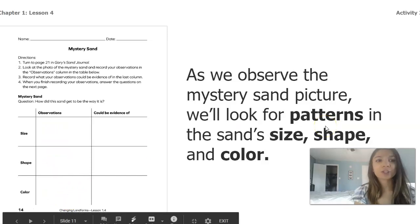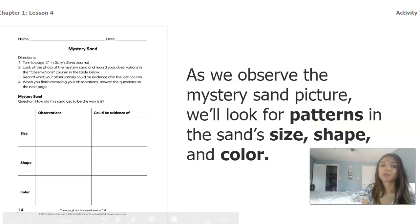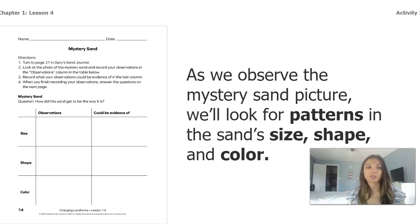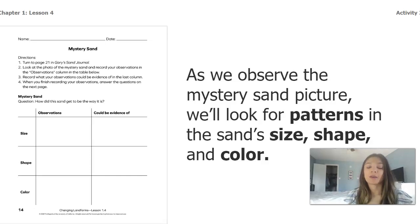After you've made your observations, you're going to think back to what we learned in the book about what these different things could mean. Based on the size, what could that be evidence of? Based on the shape, what could that be evidence of — is it new or is it old? Based on the color, we can think about evidence of what that sand is actually made of.